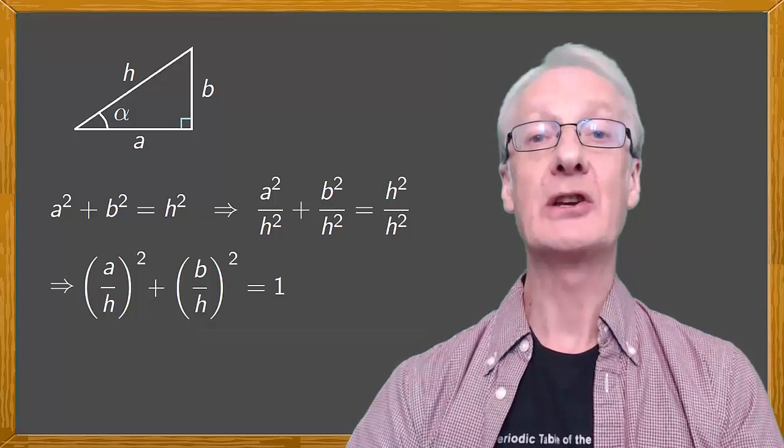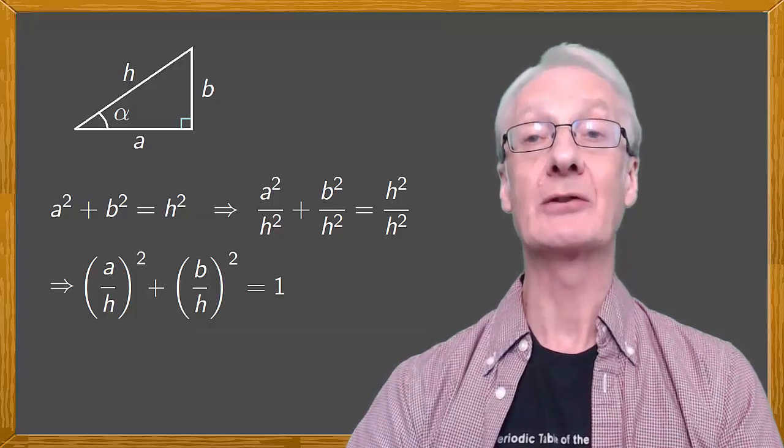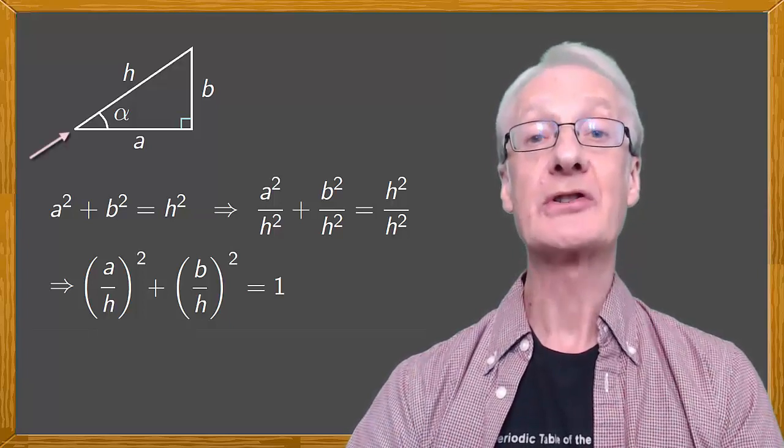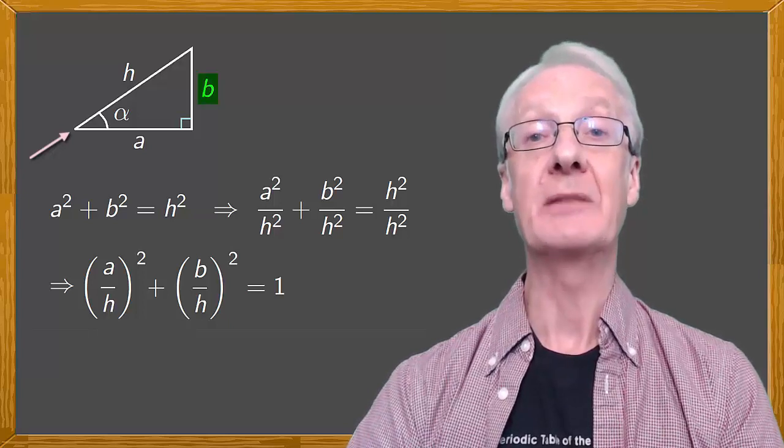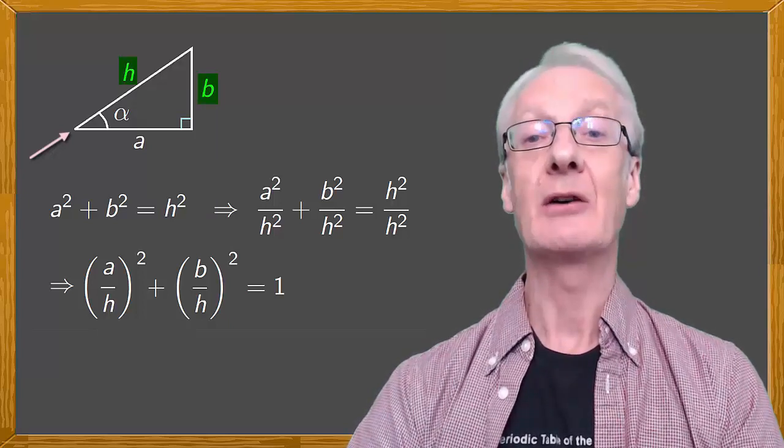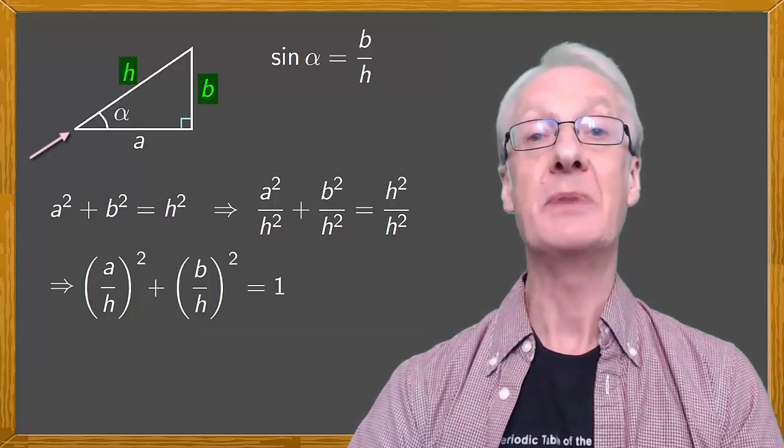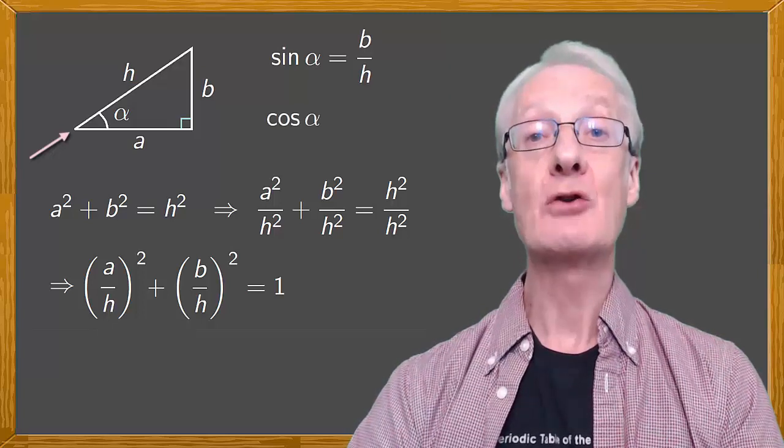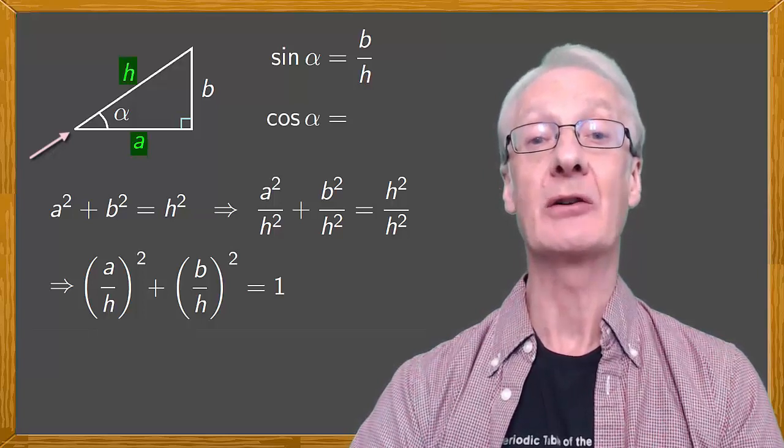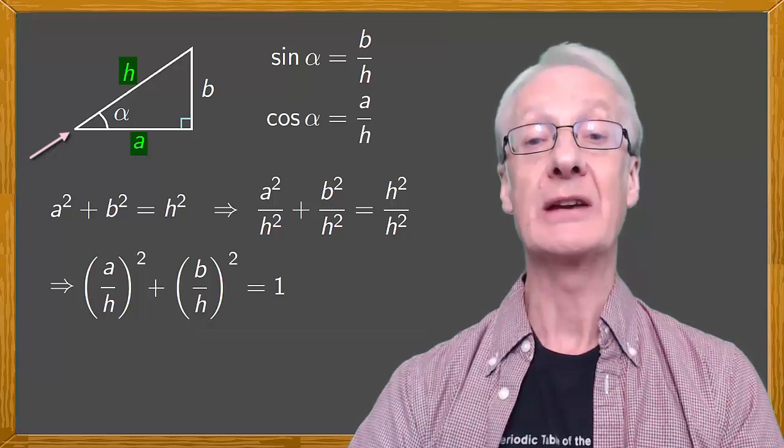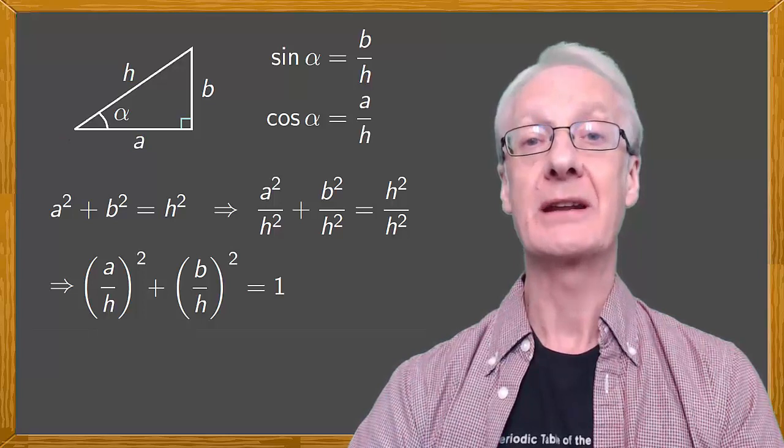Now let's calculate the trigonometric ratios of our angle alpha. First, remember that the sine of an angle is the opposite catheters divided by the hypotenuse. In our case, sine alpha is b divided by h. Cosine is the adjacent catheters divided by the hypotenuse, in our case a over h. Do you notice anything?